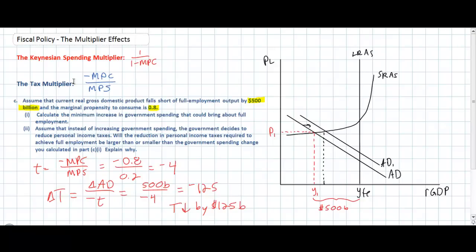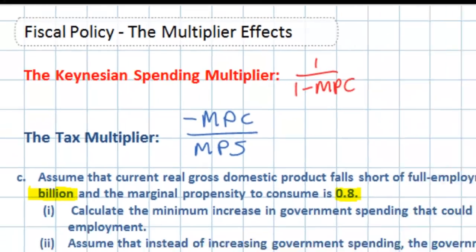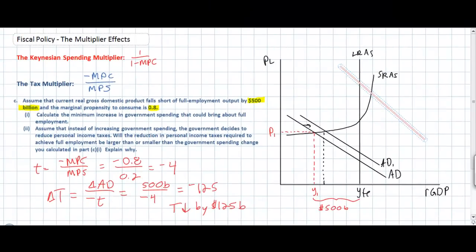To wrap up: the marginal propensity to consume and marginal propensity to save — or for IB students, the marginal rate of leakage — help us determine both the government spending multiplier and the tax multiplier. By understanding how aggregate demand changes following a change in government spending or taxes, we can determine an appropriate fiscal policy response to a recessionary gap or, in the case of demand-pull inflation, an inflationary gap. The multiplier effect works in reverse too: an increase in taxes will reduce aggregate demand by more than the initial tax increase, and a decrease in government spending will reduce aggregate demand by more than the initial spending decrease.